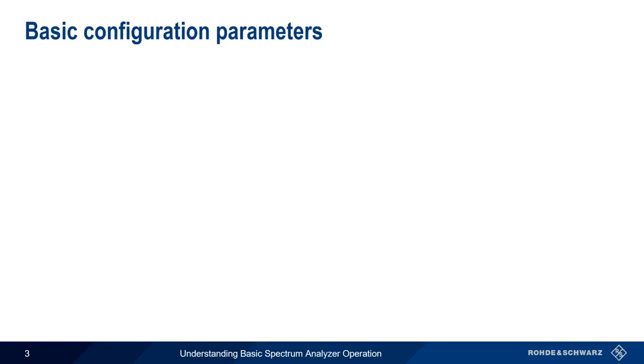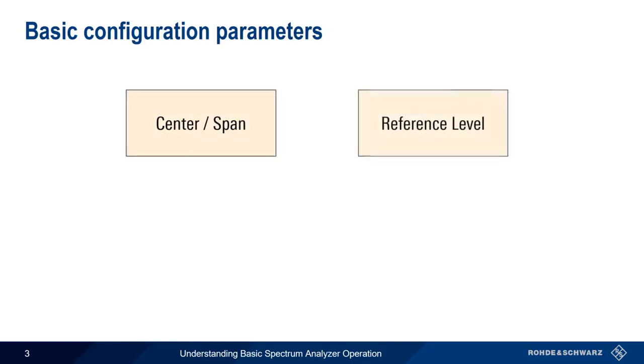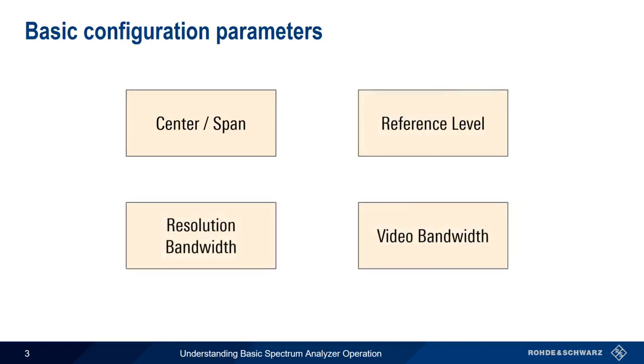We're going to concentrate on the four essential parameters needed to operate a spectrum analyzer. These four parameters are center and span, reference level, resolution bandwidth, and video bandwidth. These settings are used when making almost any kind of spectrum measurement.